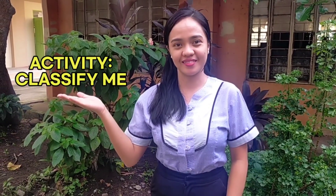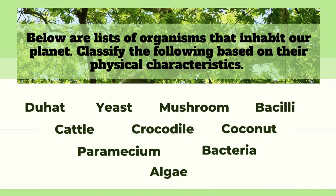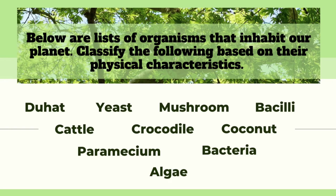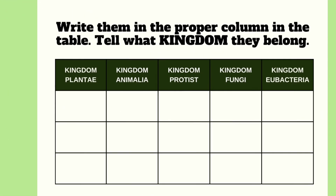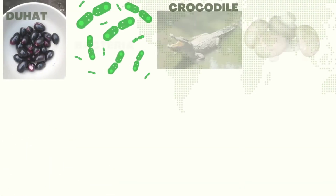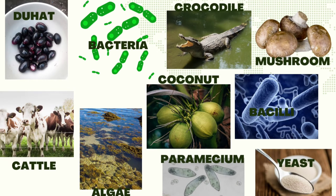To further understand this lesson, let's answer this activity: Classifying. Below is a list of organisms that inhabit our planet. Classify the following based on their physical characteristics — write them in the proper column in the table, and tell which kingdom they belong to.